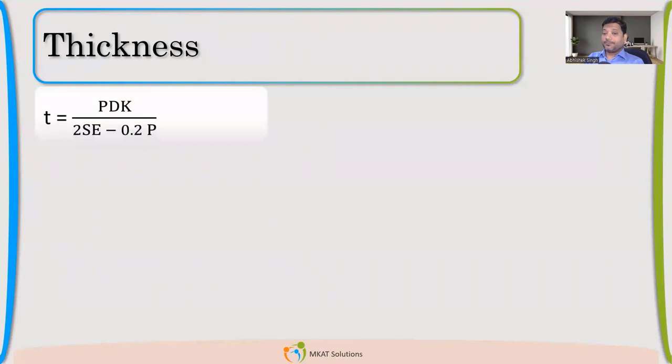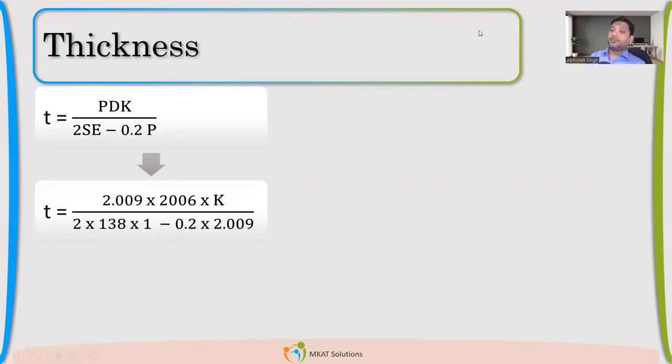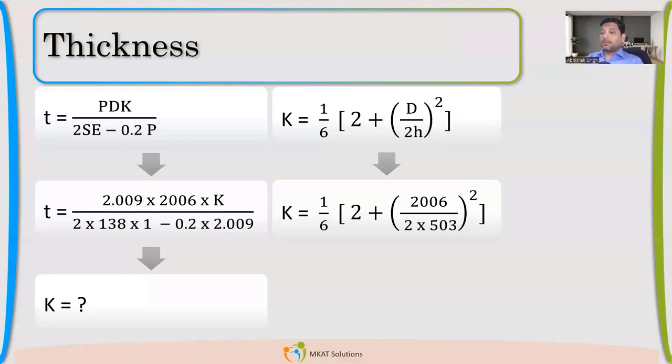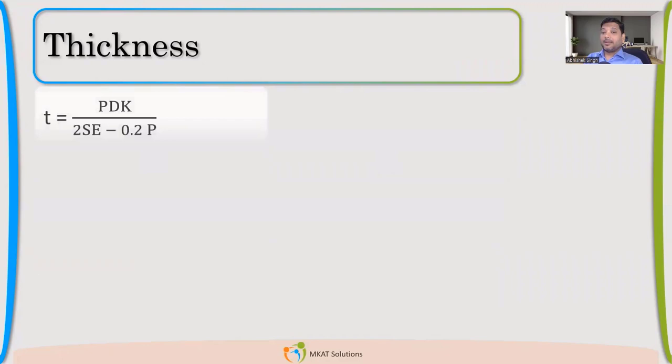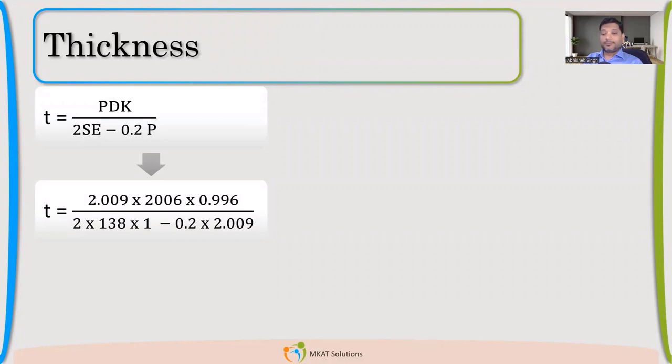Now we can use this Appendix 1-4 formula to calculate. So other values P is clear. Diameter is already given. Remember to add corrosion allowance here also while calculating the diameter. 2 is already there. 138 is the allowable. These terms I don't have to explain. Now this K is what we need to calculate. So K, we saw that it is 2 plus T by 2H. Now let us give that value. So even though it was 2 is to 1, but because of corrosion allowance, the K we got is 0.996.